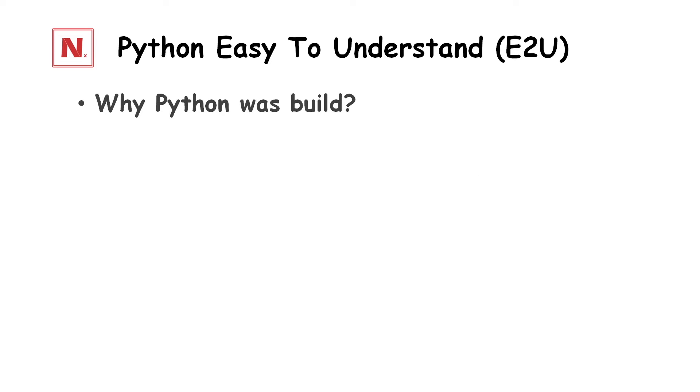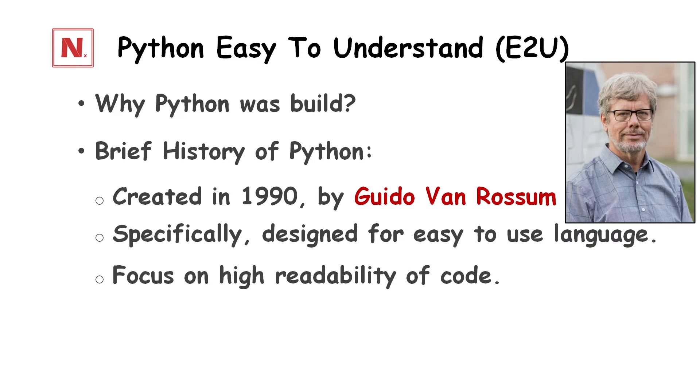Another question that arises, why was Python built? If there are many other languages like C. To answer this question, I have to tell you a brief history of Python. Python was created in 1990 by Guido Van Rossum. In those times, programming was very difficult due to less readability of programming languages. To keep this in mind, Guido started working on Python. His major focus was to design an easy to use language with a very high focus on readability of code.